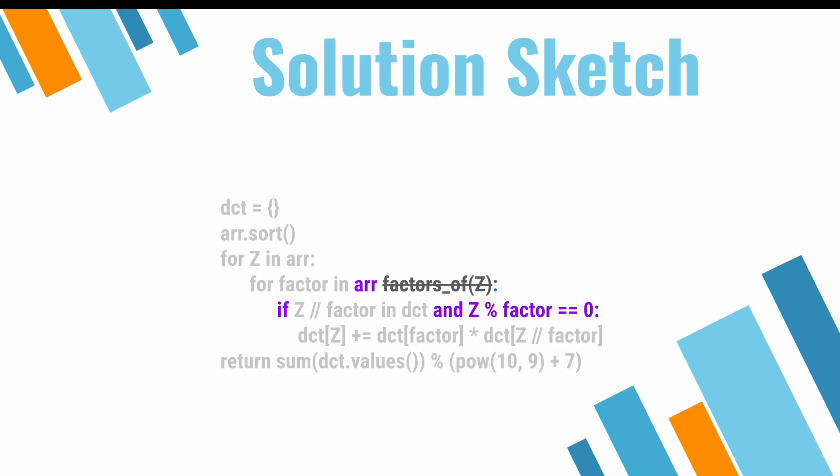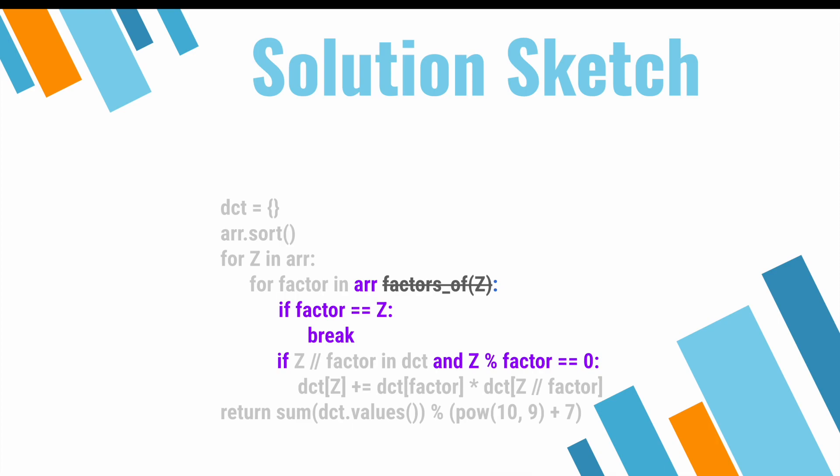So let's do that. We'll just iterate through our array and consider a number to be a factor when it evenly divides z. We can also just break the loop when factor is equal to z, because we know that there will be no more numbers that evenly divide z once we reach numbers that are larger than z.